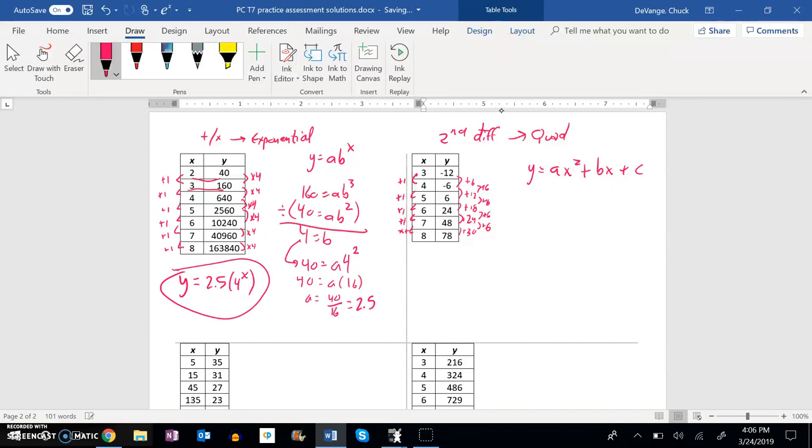So I'm going to need to plug in three points. So I'll take them one at a time. Negative 12 equals A times 3 squared plus B times 3 plus C. And then negative 6 equals A times 4 squared plus B times 4 plus C. And the third one, 6 equals A times 5 squared plus B times 5 plus C.